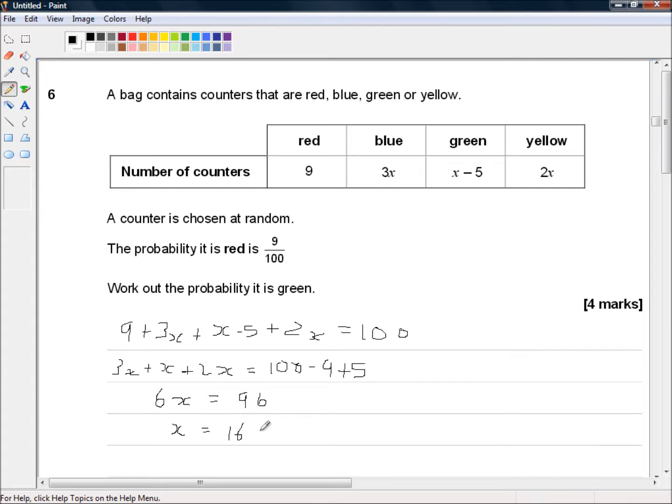OK. So x equals 16. So the number of green ones, green equals 16 minus 5 equals 11.